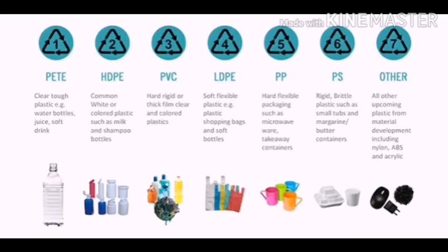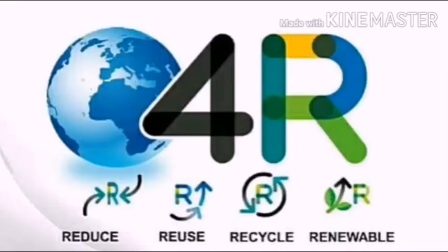Some common plastics and their uses: PETE — used in water bottles, juice, and soft drinks; HDPE — used for milk and shampoo bottles; PVC — hard rigid or thick clear and coloured plastic; LDPE — soft flexible plastic used for shopping bags and soft bottles; PP — hard flexible packaging such as microwave ware and takeaway containers; PS — rigid brittle plastic such as small tubs and butter containers. Other plastics include nylon, ABS and acrylic. As responsible citizens, we must remember the golden four-R principle: Reduce, Reuse, Recycle and Recover. We should use green and blue bins for disposing waste.